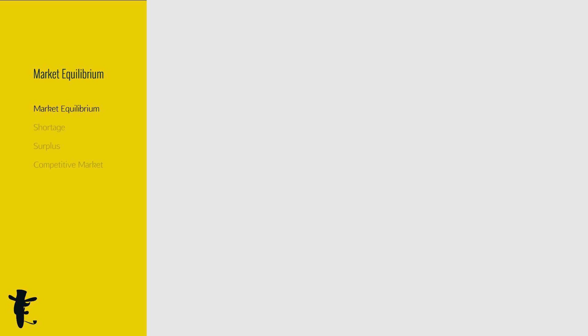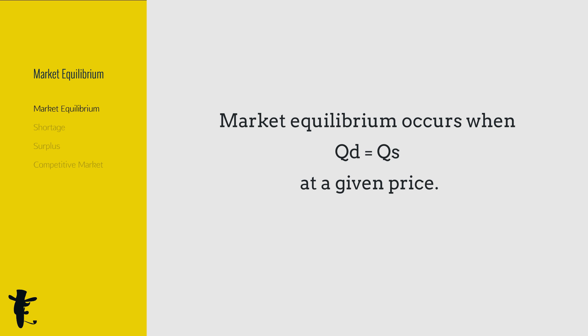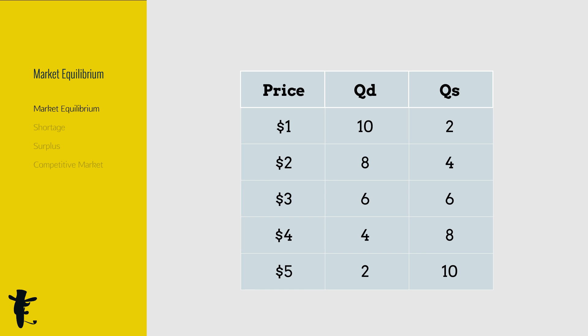What is market equilibrium? It's when quantity demanded equals quantity supplied at a given price. Can you guess where the market equilibrium is here? Yes, at three dollars, both QD and QS are equal.